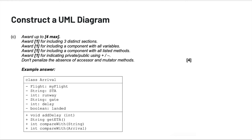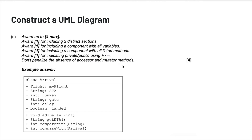Next, construct a UML diagram. Here you're drawing a UML diagram to describe a class. Looking at the mark scheme is important: the diagram should be divided into three distinct sections, include a component with variables and methods, and indicate access modifiers like private and public using plus or minus signs. You don't necessarily need to include accessors and mutators like get and set.